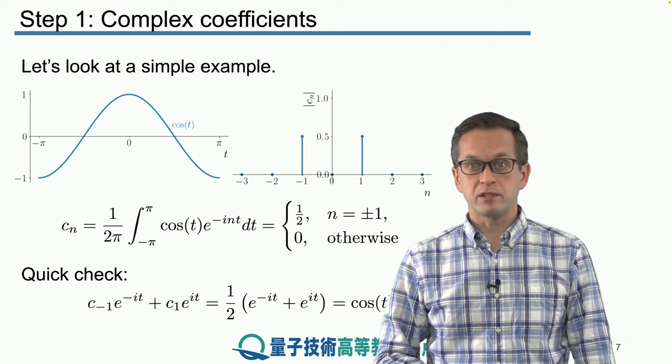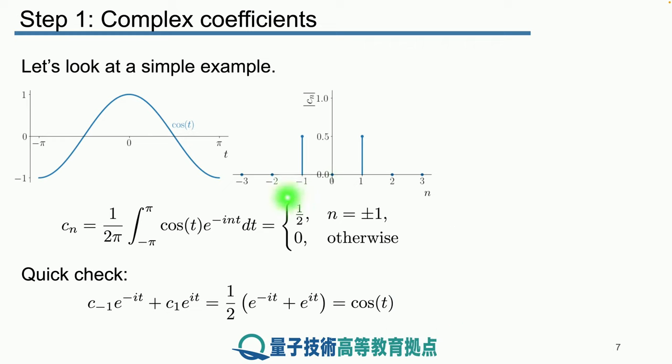So let's just check that our Fourier series is correct. We substitute into our series expansion. We've got cn of minus 1 times e to the power of minus i t plus c1 times e to the i t. We know that both c1 and c minus 1 are equal to a half. So we've got a half times the sum of the two exponentials, which we immediately can recognize as the cosine of t. So that's good. That's working as it's supposed to be.